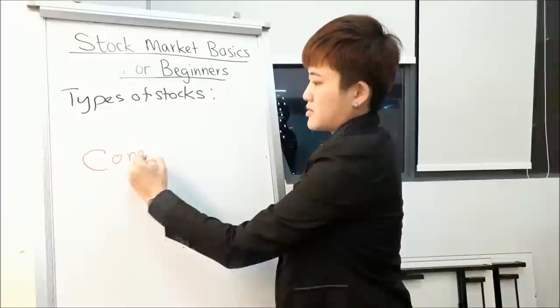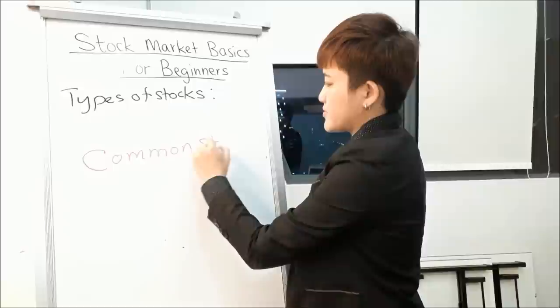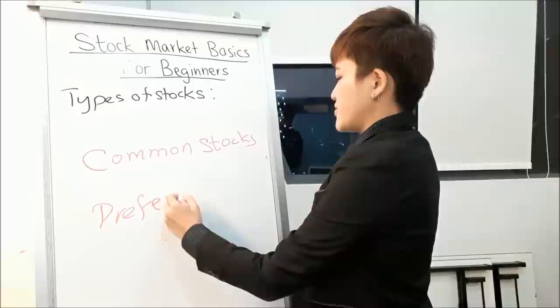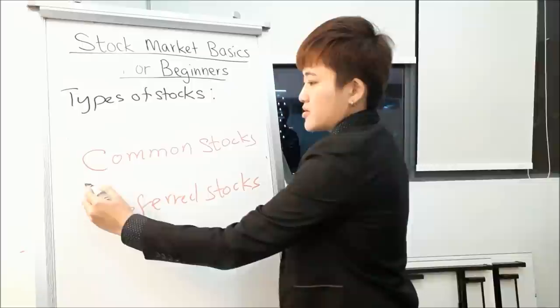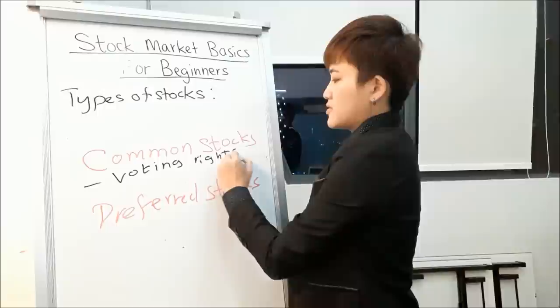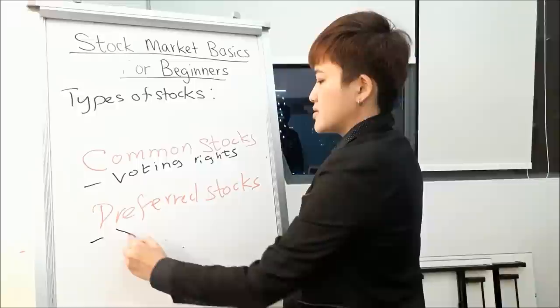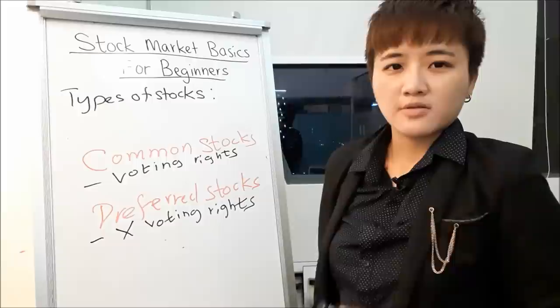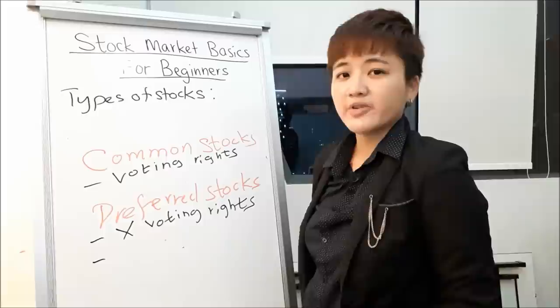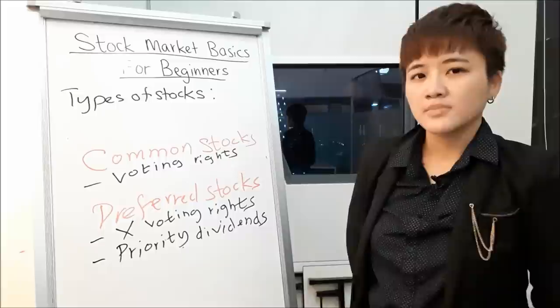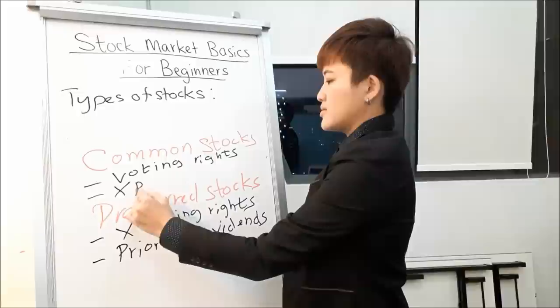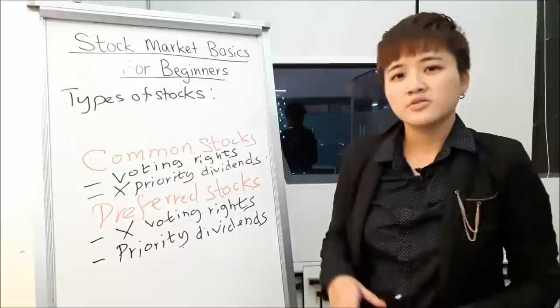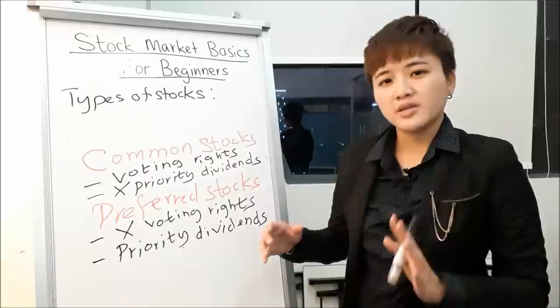Stocks can also be classified as common stocks or preferred stocks. When you buy common stocks, you get voting rights. With preferred stocks, you get priority for dividend payments — they pay you dividends before they decide whether to pay common stockholders. Dividends for common stockholders are normally not guaranteed. So you invest in common stocks when your focus is mainly capital gains, and in preferred stocks if your main focus is dividends.